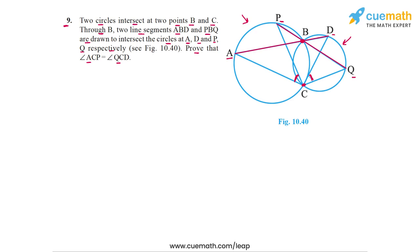I'm going to tell you the logic we are going to use to solve this problem, and then we will write out the solution step by step. It's actually a very simple logic. We will use the fact that angles subtended by the same arc on two points on the circumference are equal. So angle ACP must equal angle ABP, because these two angles are subtended by the same arc AP. In the other circle, angle QCD must equal angle QBD because these two angles are subtended by the same arc QD. Finally, angles ABP and QBD are equal because they are vertically opposite angles.